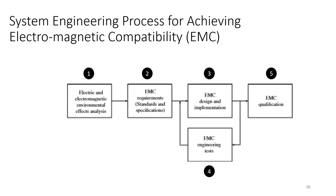The process for achieving electromagnetic compatibility is a five-part process. The first part is to do what's called an E4A analysis — Electric, Electromagnetic, Environmental Effects. Once you've evaluated your system's impact with regard to electromagnetic radiation, step two is to develop requirements in the form of standards and specifications. Then step three is design and implement. Step four, you do some testing. And once you're satisfied with the results, the system will be delivered for qualification purposes.